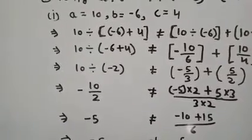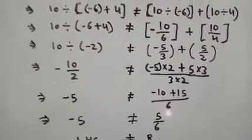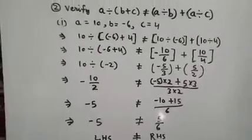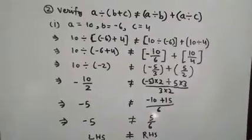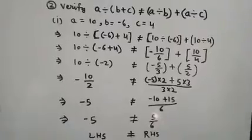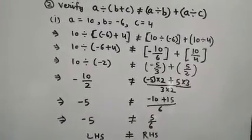Minus 5 is not equal to 5 upon 6. So LHS is not equal to RHS. Student I hope you will understand this property. In division there will be no property be satisfied because A divided by B is not equal to B divided by A.